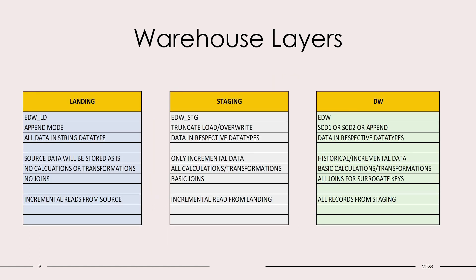Now let us check out the working of each layer. We have three layers: Landing, Staging, and DW. The name of the landing layer database would be EDW_LD. Similarly, for staging it would be EDW_STG, and DW would be EDW.